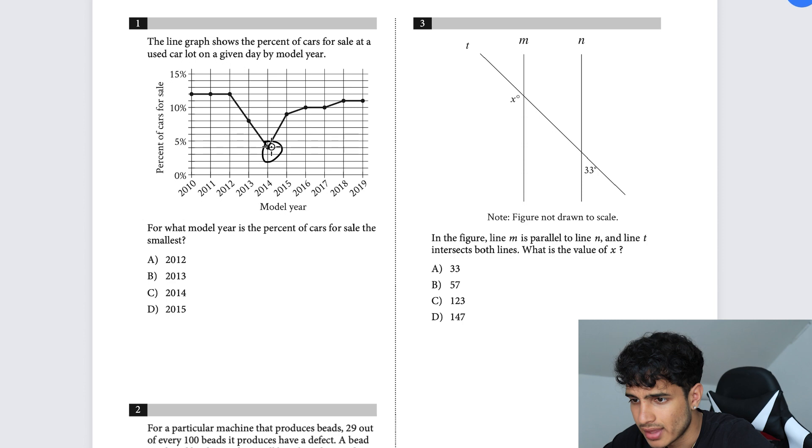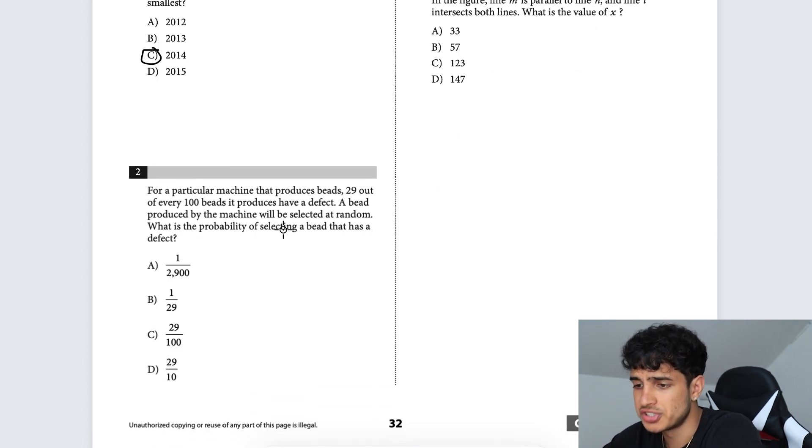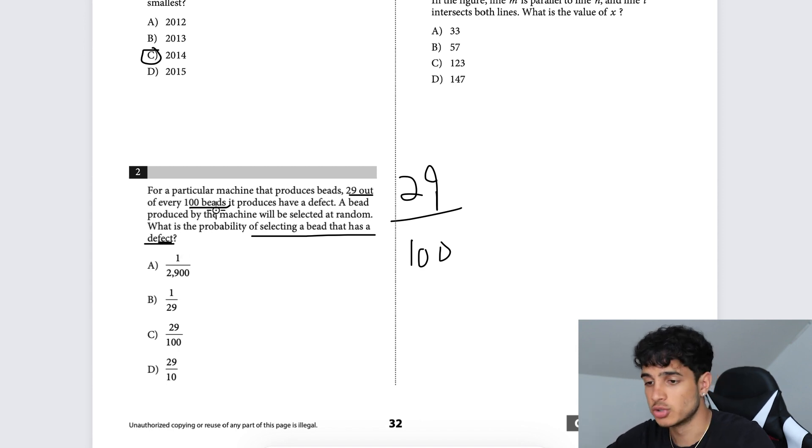For a particular machine that produces beads, 29 out of 100 beads it produces have a defect. If a bead produced by the machine is selected at random, what is the probability of selecting a bead that has a defect? Well, 29 out of every 100 beads have a defect. The problem really gives you that: 29 out of 100. Turn that to a fraction and you get it.